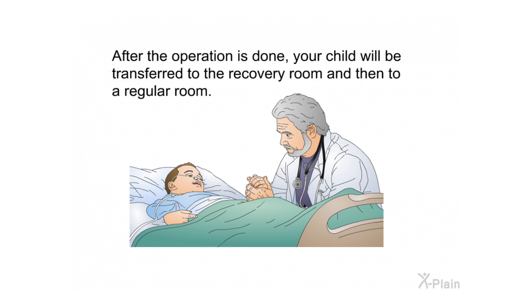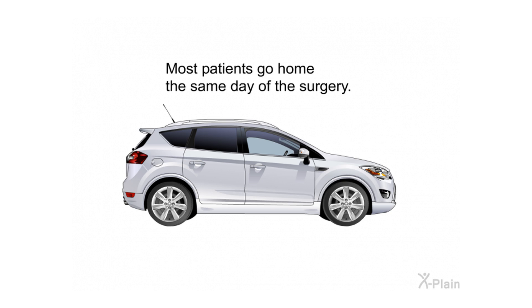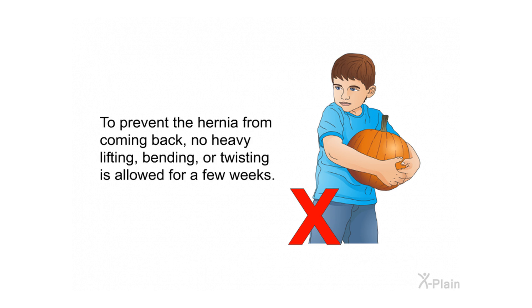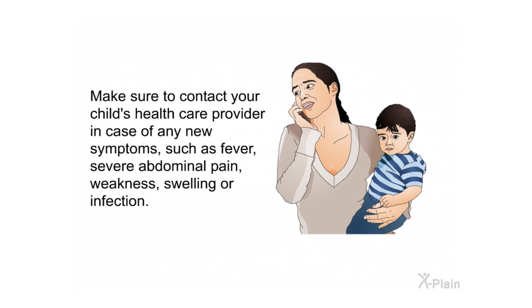After the surgery. After the operation is done, your child will be transferred to the recovery room and then to a regular room. Most patients go home the same day of the surgery. Some swelling around the incision and bluish discoloration is normal. To prevent the hernia from coming back, no heavy lifting, bending, or twisting is allowed for a few weeks. Make sure to contact your child's health care provider in case of any new symptoms such as fever, severe abdominal pain, weakness, swelling, or infection.